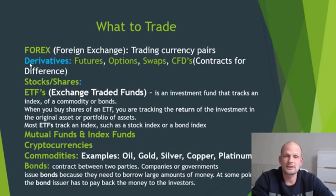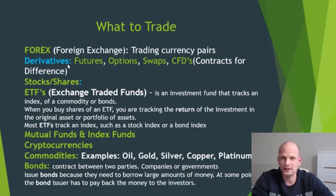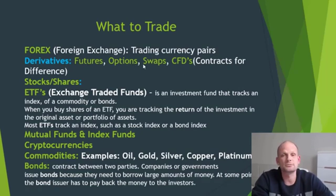Then we have derivatives — as I mentioned from the previous slides, these are contracts for differences. These green ones you can see are pretty much the markets. Derivatives is not a single market, but under the derivatives market there is the futures market, options market, swaps, and CFDs.